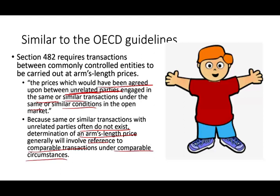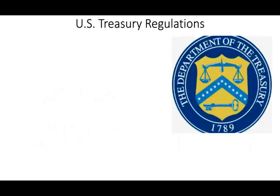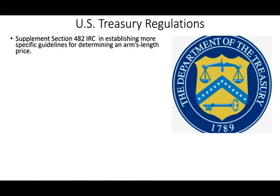Because identical transactions with unrelated parties don't always exist, determining an arm's length price generally involves reference to comparable transactions under comparable circumstances. Sometimes a transaction is so unique there is nothing to compare it to — then you look at the closest comparable circumstances. The U.S. Treasury has its own regulations that supplement Section 482, establishing more specific guidelines for determining what constitutes an arm's length transaction.